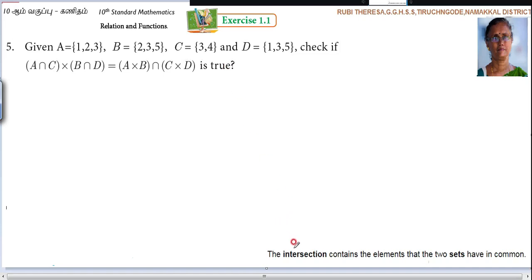What is meant by intersection? The intersection contains the elements that the two sets have in common. That means elements in common. That is the concept. Two sets, elements in common. Both the sets should have the common elements.